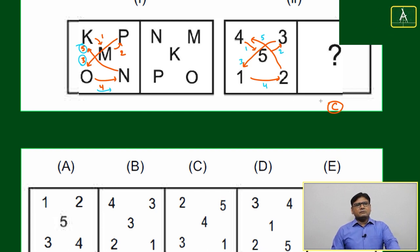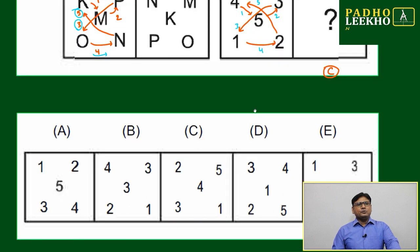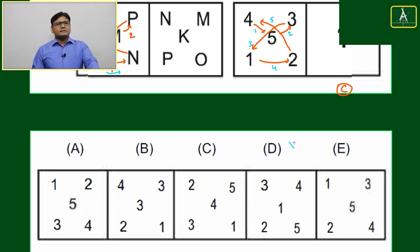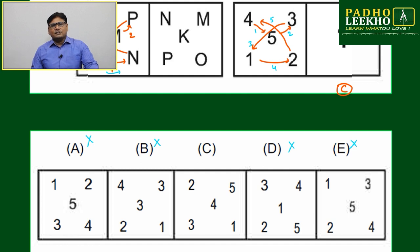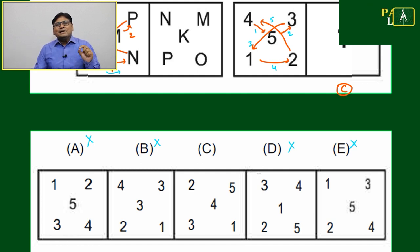I think based on that itself, you will be able to eliminate all the choices. Four is not at center. No need to think about the other or next step. That is the beauty of understanding the logic in the correct way.